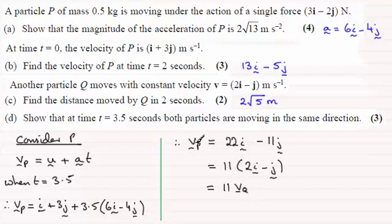So because VP is a multiple of VQ, they must be vectors going in the same direction. So therefore we can say that therefore P and Q are moving in the same direction.